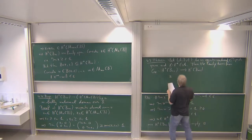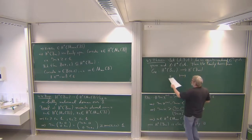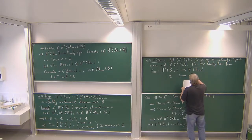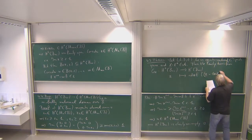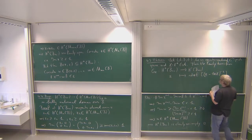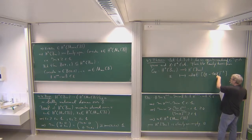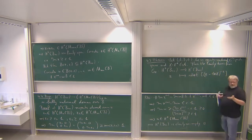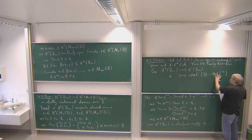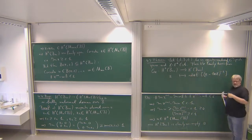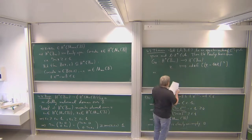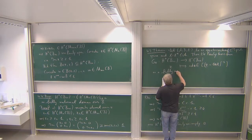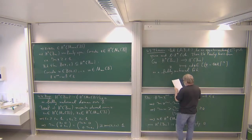The Cauchy transform is defined as: G_X(z) = (id ⊗ E)[(z − 1 ⊗ X)^{−1}]. We take z in the N×N matrices over B in the upper half-plane, subtract 1 ⊗ X to get an element in M_N(A), take its inverse, and apply id ⊗ E to bring it back to M_N(B). I'm claiming this collection of functions, one for each matrix size, is a fully matricial function.